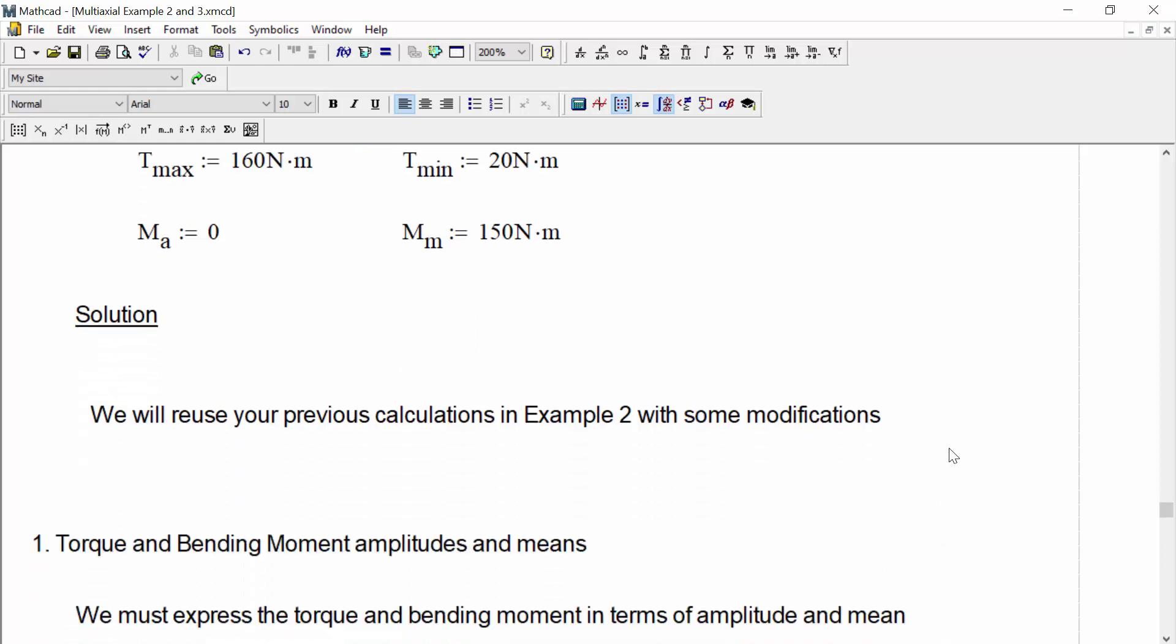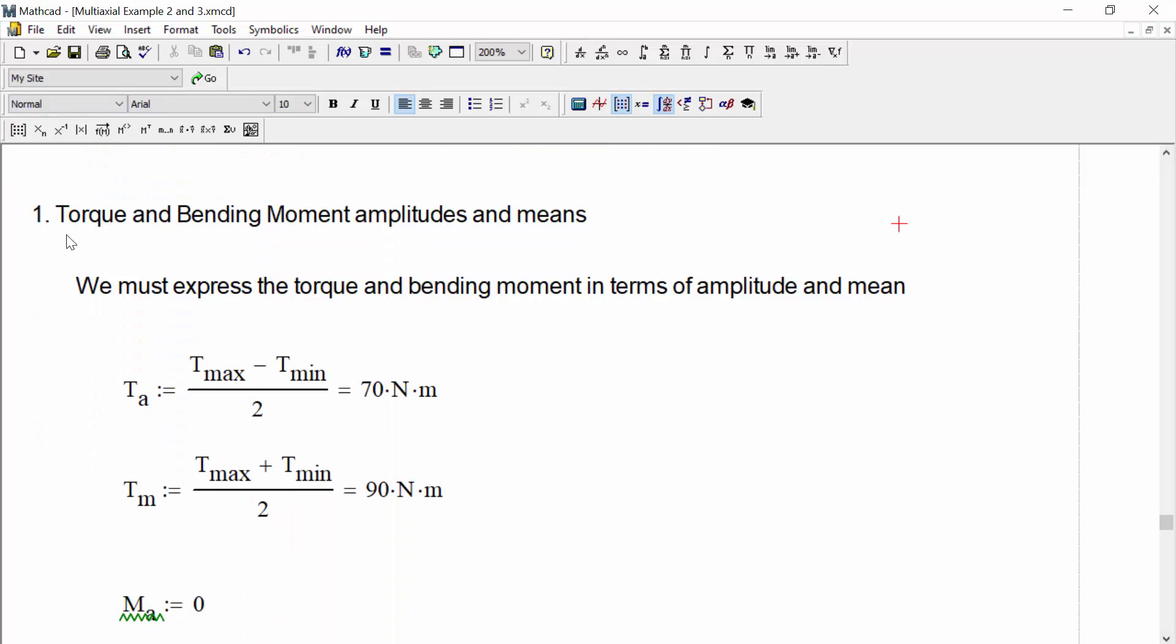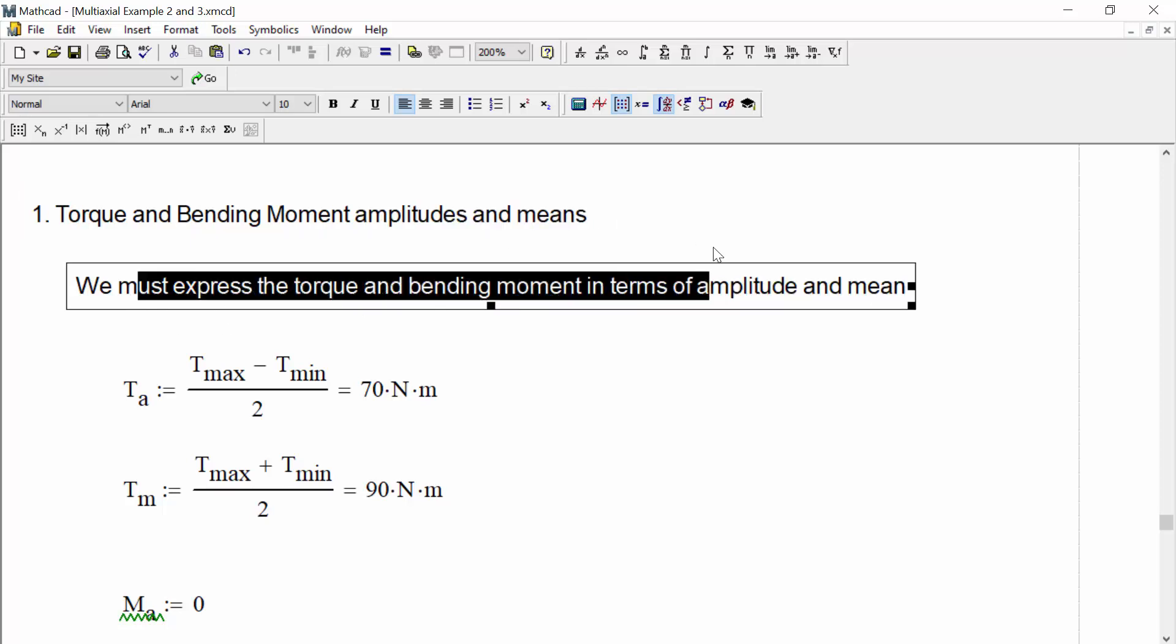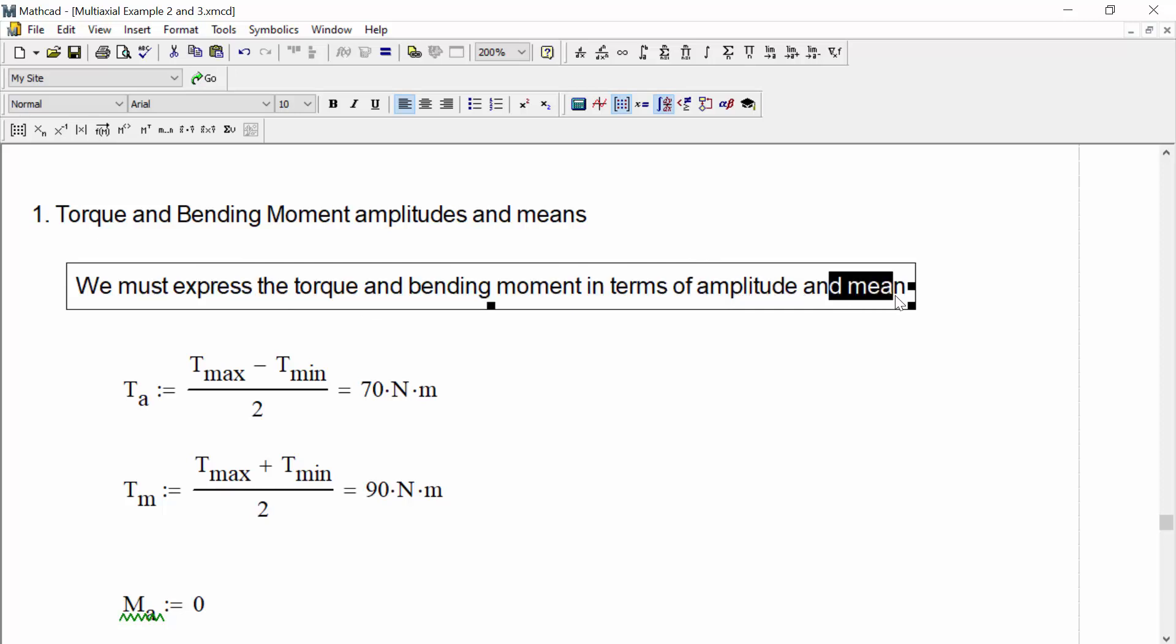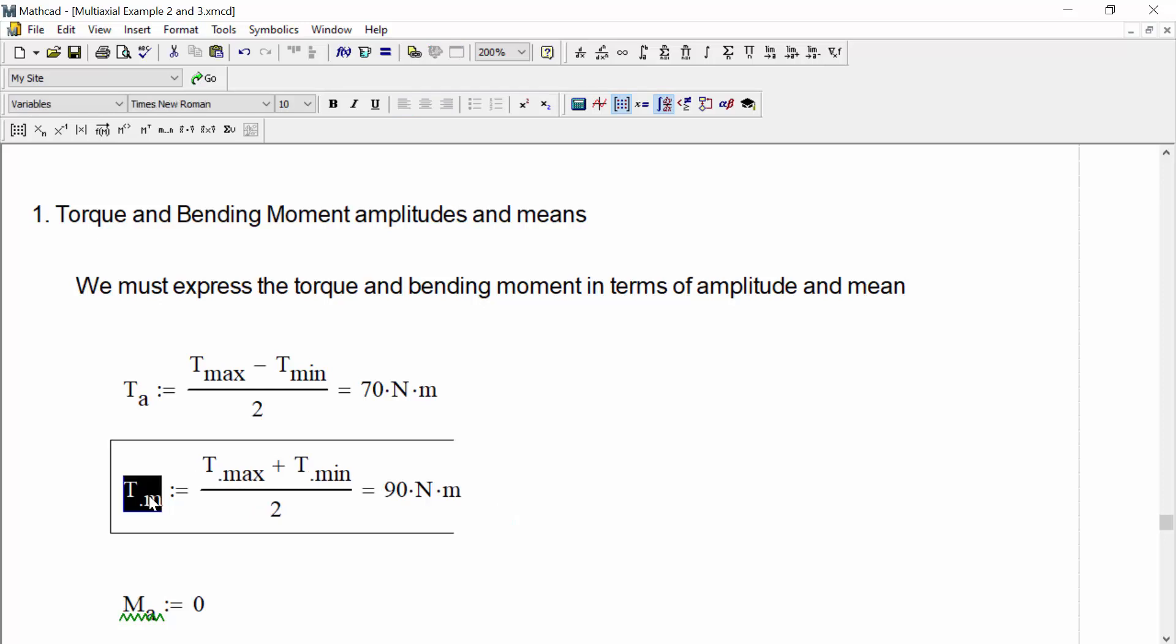So in our solution, we will reuse the previous calculations that we made in example 2, but with some modifications. One of the main modifications is in the way that we calculate the torque and the bending moment amplitudes and their mean values. We must express torque and bending moment in terms of amplitude and mean. So for the torque amplitude, we'll define that using our known equation for amplitudes, where the amplitude is the range, so T max minus T min divided by 2. So our torque amplitude is 70 newtons times meters. And then we'll calculate the torque mean value, where the mean is the average of the max and min, so T max plus T min divided by 2. So our mean torque is 90 newtons times meters.